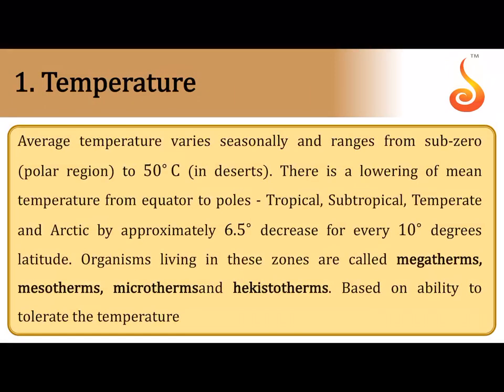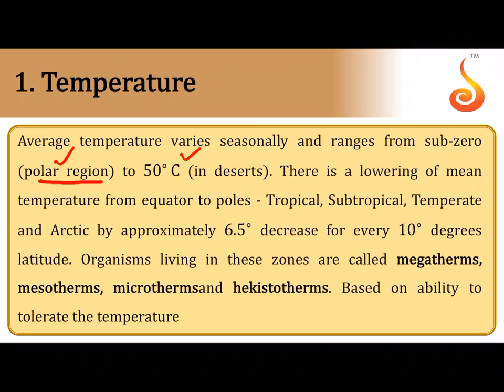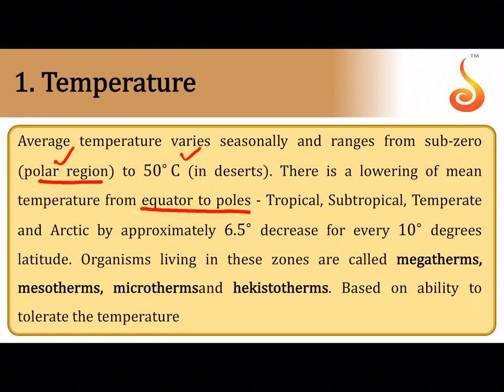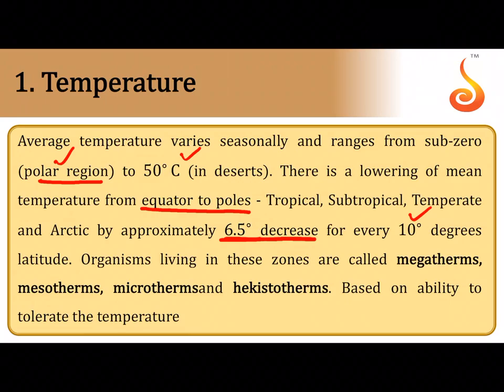In polar regions the temperature dips below subzero, while in deserts it shoots up to 50°C. Temperature fluctuates from equator to the poles — for every 10° rise in latitude there is a decrease of 6.5°C. As you go away from the equator there is a drastic fall in temperature. Accordingly, organisms living in these zones can be classified into megatherms, mesotherms, microtherms, and hecistotherms.